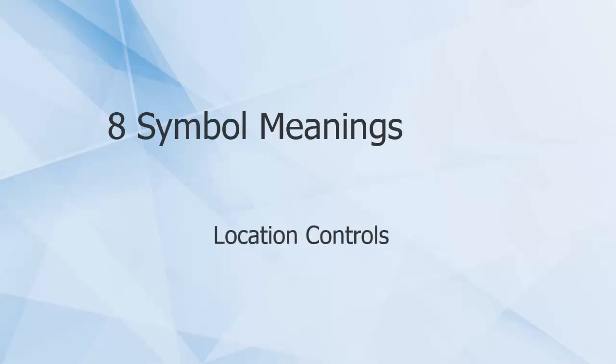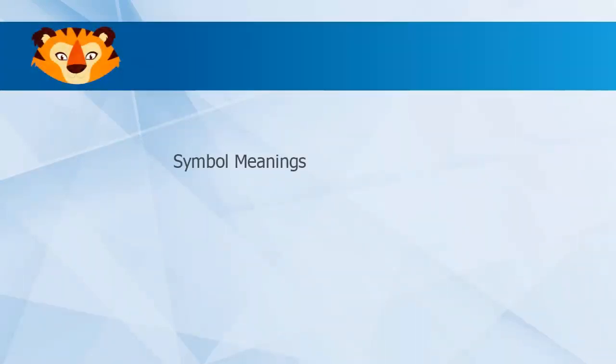We will now move on to location controls. The location of features can be controlled with three callouts: position, concentricity, and symmetry.